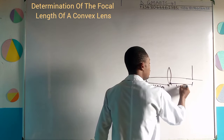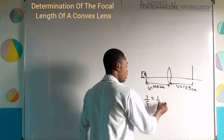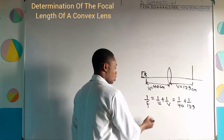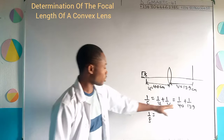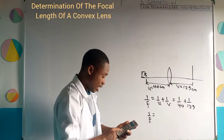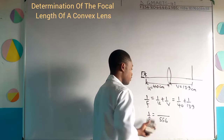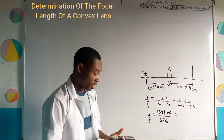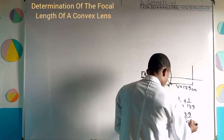Using the lens formula, 1 over F equals 1 over U plus 1 over V, that gives us 1 over 40 plus 1 over 13.9. Working out the LCM — 40 times 13.9 gives 556. So 556 divided by 40 gives 13.9, and 556 divided by 13.9 gives 40. Adding the numerators: 13.9 plus 40 gives 53.9 over 556.